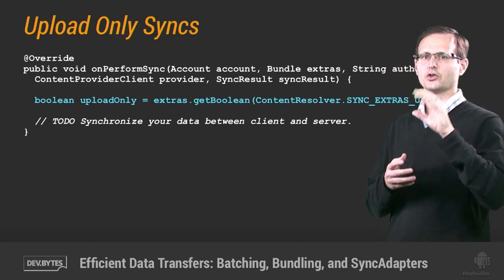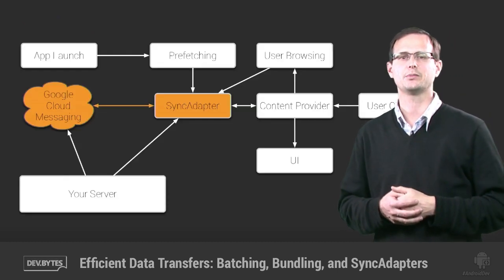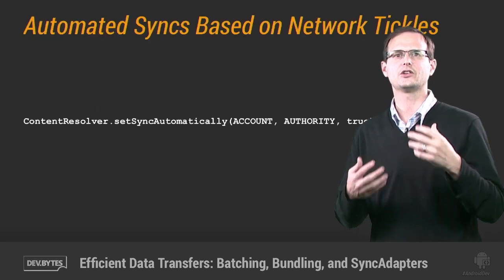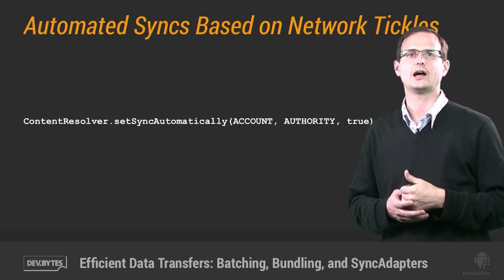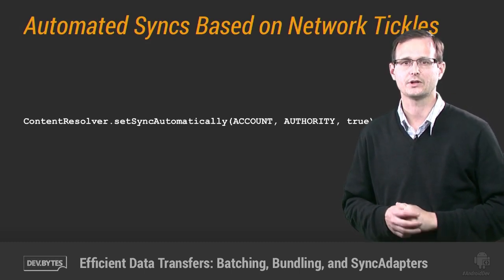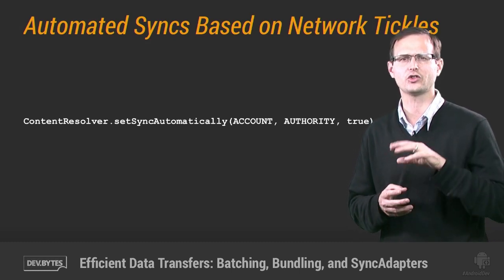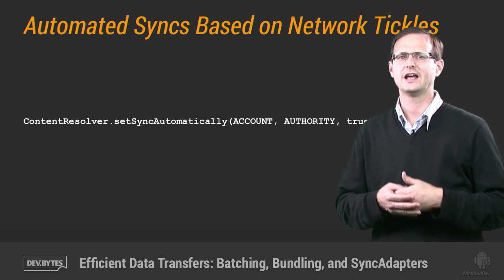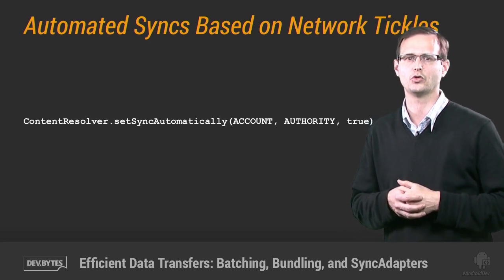You can also configure your sync adapter to sync whenever the platform opens a connection to keep the TCP/IP connection used for things like Google Cloud Messaging alive, by setting it to sync automatically. This approach ensures that your app is regularly updated without having to schedule your own client-side polling. That said, the frequency of network tickles can lead to a large number of transfers, so this should only be enabled when your app is in the foreground, and even then you may want to artificially lower the frequency of syncs within your onPerformSync method.